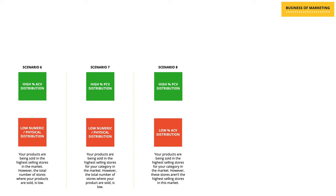In scenario eight, we have a situation where there is high percentage PCV distribution but at the same time low percentage ACV distribution. In most cases this is actually a very good situation to be in, because even though your product might not be present in the highest selling stores in the market, it is being sold in the stores which are the biggest selling stores for your category of products. Therefore, given a choice, in most cases the right thing to choose would be to have a better percentage PCV distribution for your products.